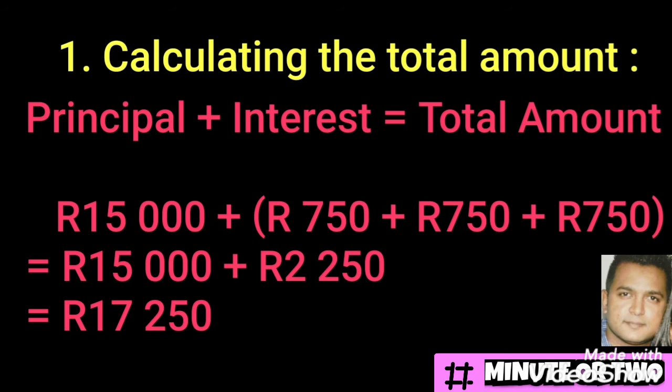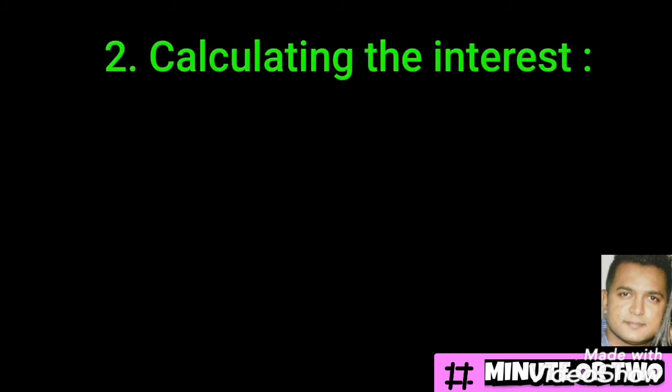The total amount is the principal plus the interest. Now that we've worked out the interest for each year, we present our answer as fifteen thousand plus seven hundred and fifty for each year. Show your full working because you don't want to disadvantage yourself in the exams. Our total amount at the end of three years will be seventeen thousand two hundred and fifty.